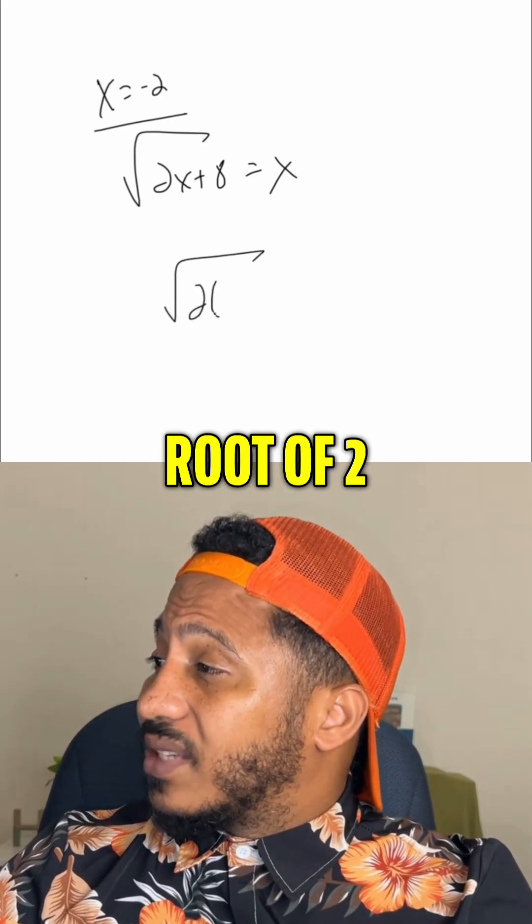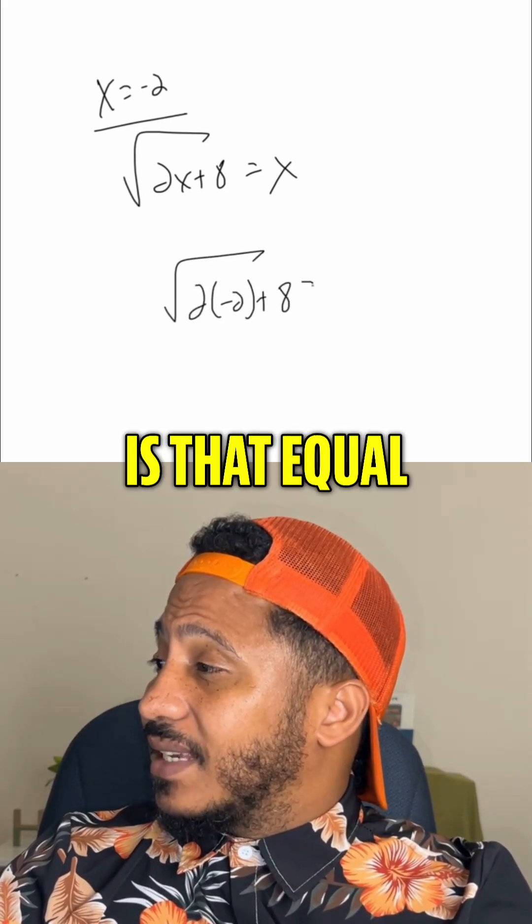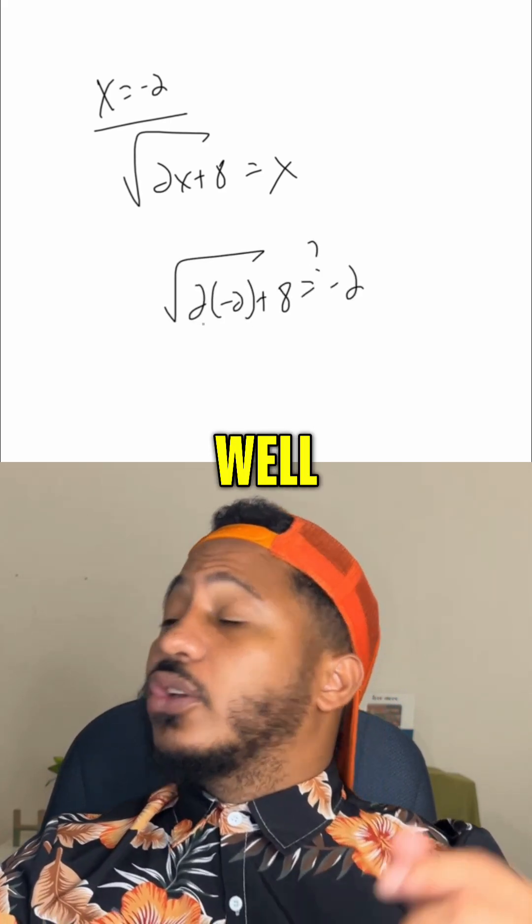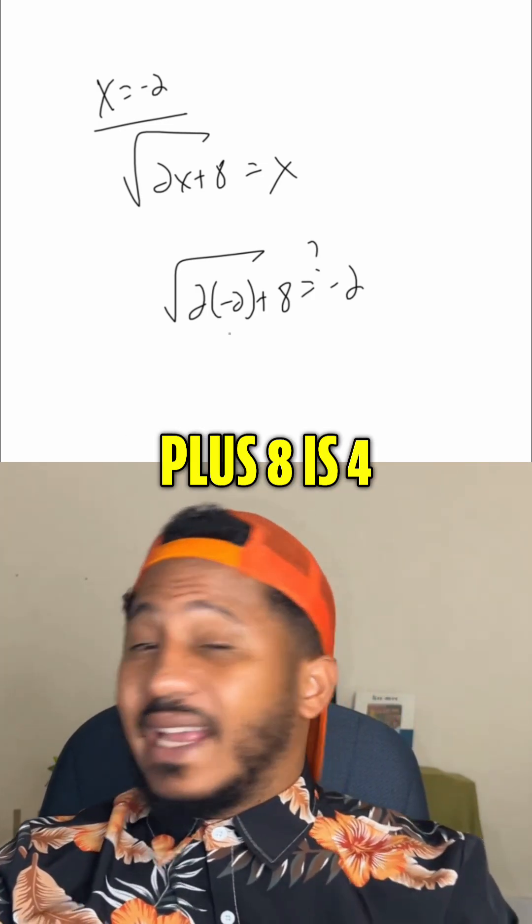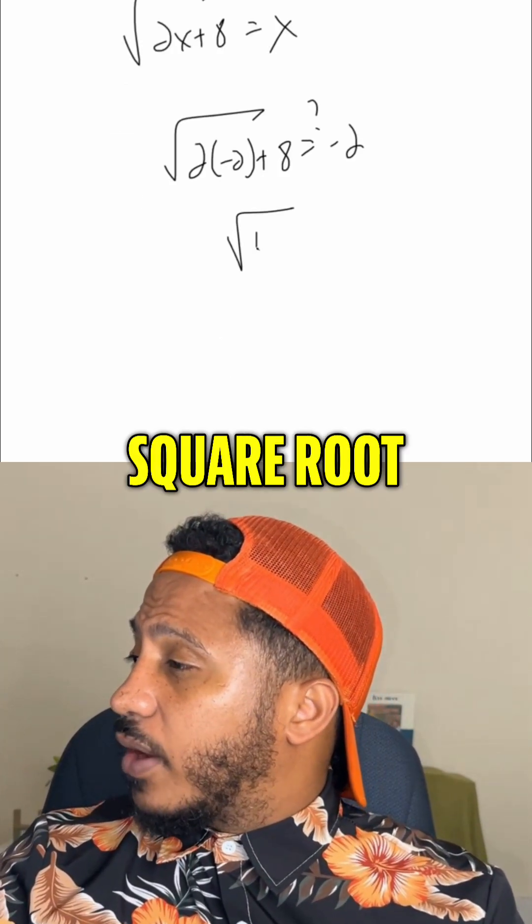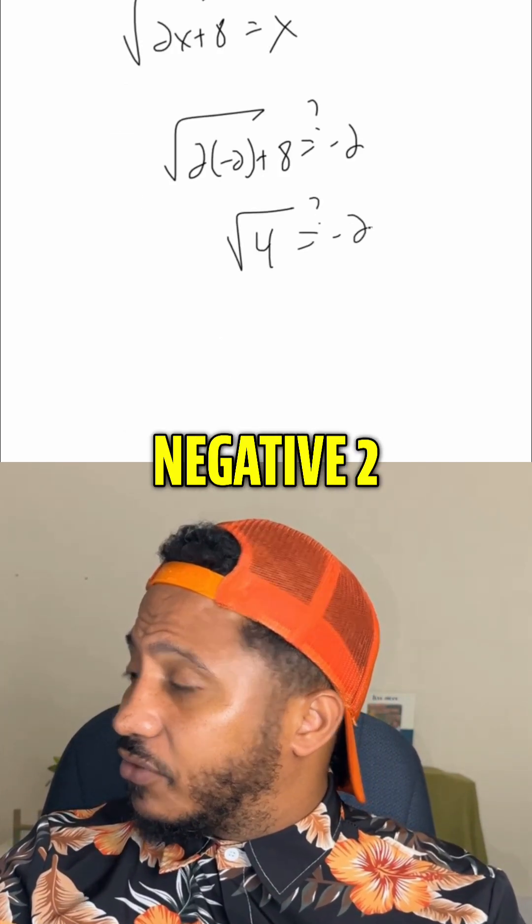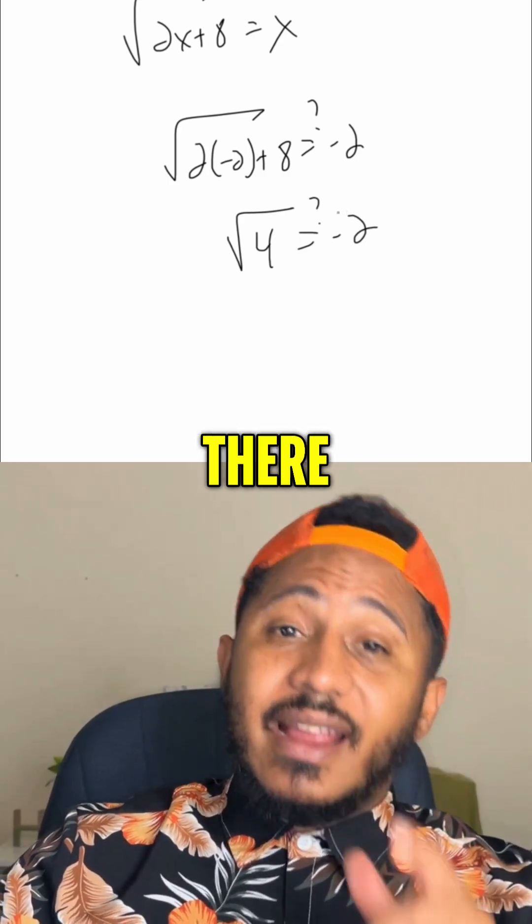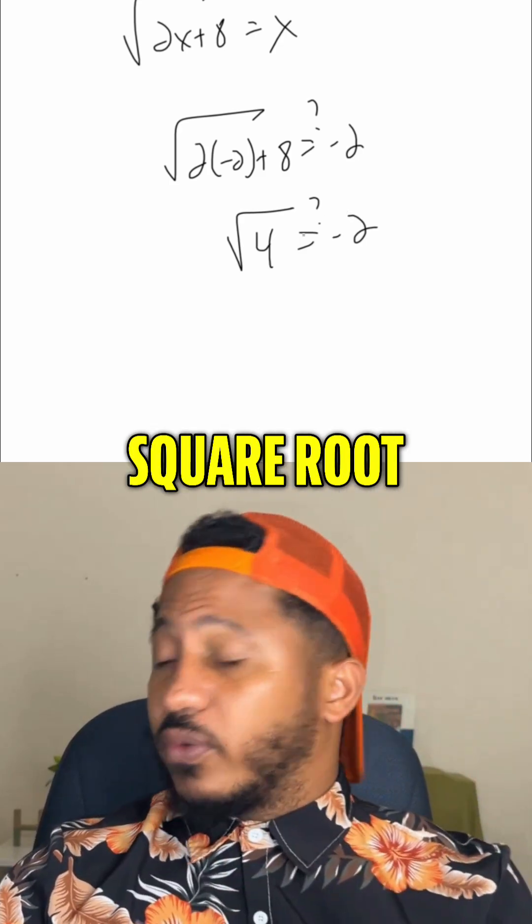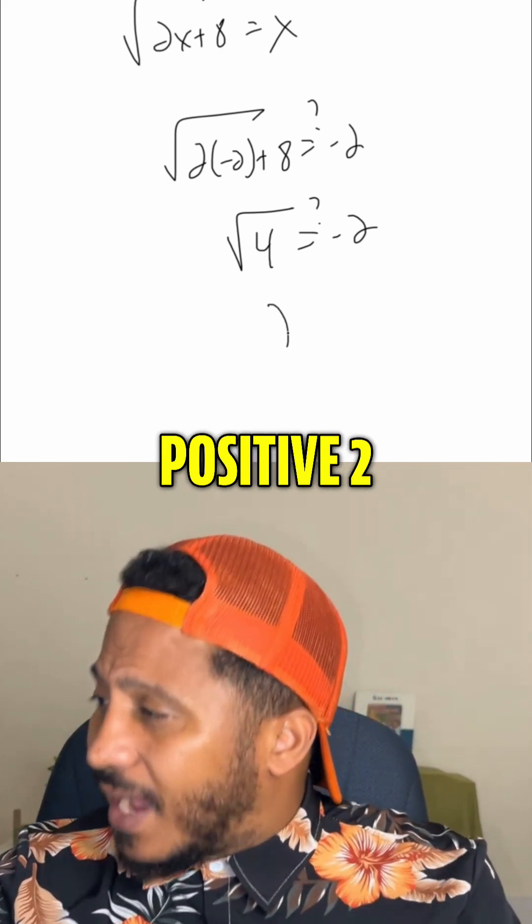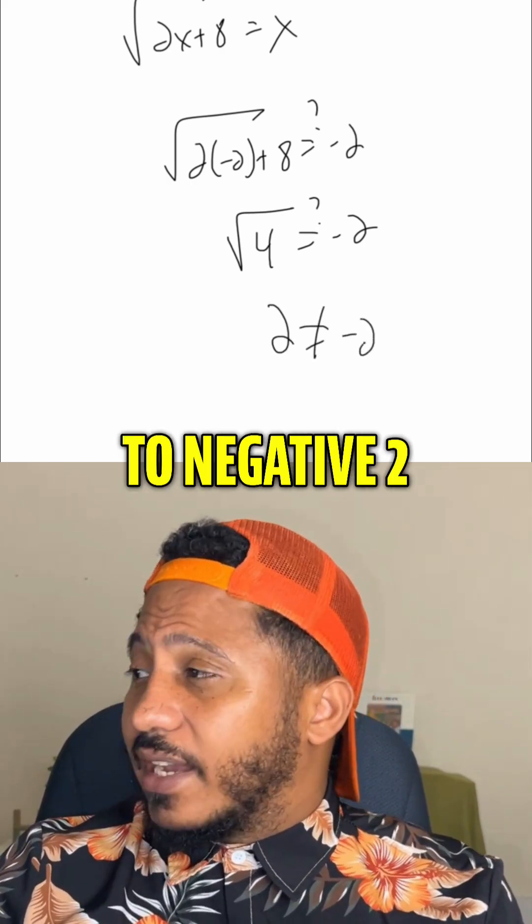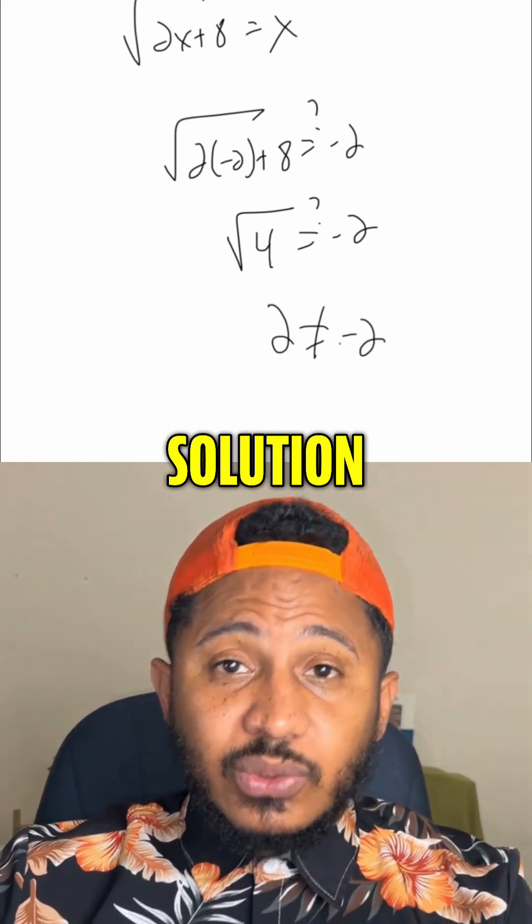Plugging in negative 2, we get the square root of 2 times negative 2 plus 8. Is that equal to negative 2? Well, 2 times negative 2 is negative 4 plus 8 is 4. So the square root of 4, is that equal to negative 2? Again, since the square root was already there, this means the principal square root, the positive square root. So the positive square root of 4 is positive 2, which is not equal to negative 2. Meaning negative 2 is not a solution.